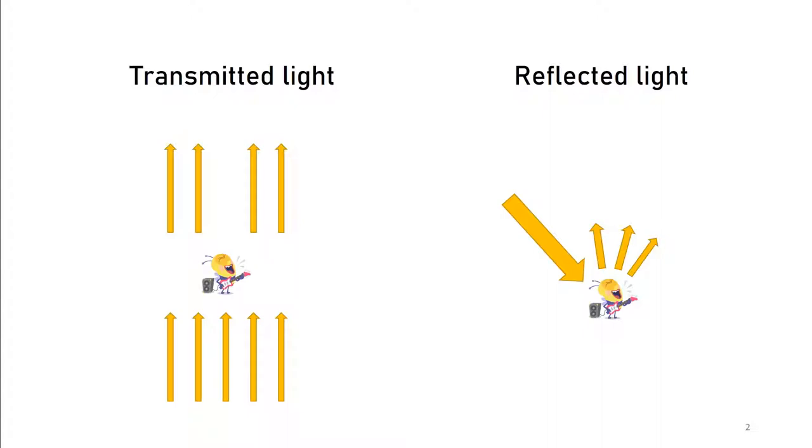If you use transmitted light, you want to use a sample that is transparent enough for light to go through. Some parts of the sample might absorb more light than other parts, and that's why you get a contrast.